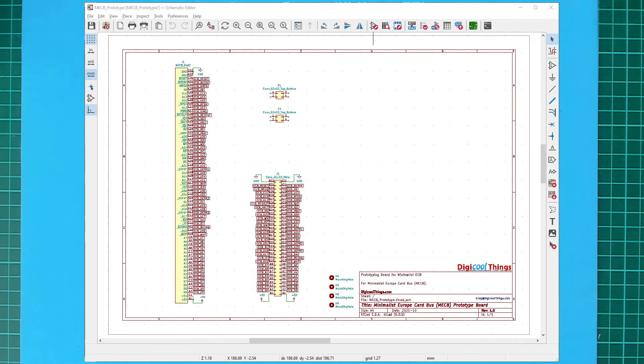OK, so on the final schematic, you can see that I've had to fully label all 64 bus connector pins, as we want to bring out all pins to the prototype board, even though for the minimalist Eurocard bus, we are only using a subset of the ECB signals.